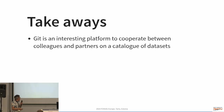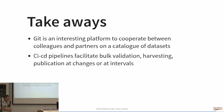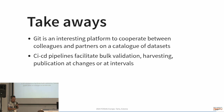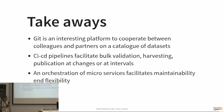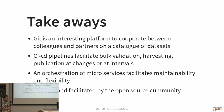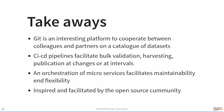So that was the presentation — some takeaways. Git is a very interesting platform to facilitate a catalog of datasets and how to maintain it. CI/CD pipelines are very useful to validate metadata, share metadata, and even harvest metadata — in some projects we harvest metadata from various catalogs using CI/CD processes. CI/CD gives you these pipelines showing what failed and succeeded, plus a complete log of the harvest, which is really valuable. Orchestration of these microservices facilitates maintainability and flexibility. And this is all inspired and facilitated by you, the open source community — thank you.